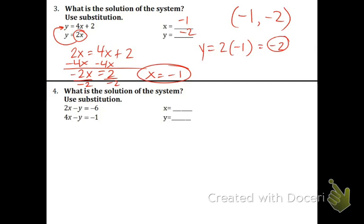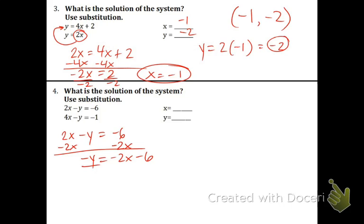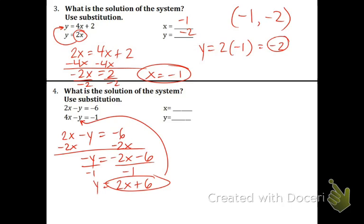Now the next one. The y is not by itself. You can choose either equation to get the y by itself — I'll just choose the first one. So let's subtract the 2x to the other side. Do not combine those right terms, that's illegal. Bring the negative 2x first, and now divide by negative 1 to get rid of all the negatives. y equals positive 2x plus 6. Take that 2x plus 6 and plug it in for the y in the second equation because that's the one we have not worked with yet.